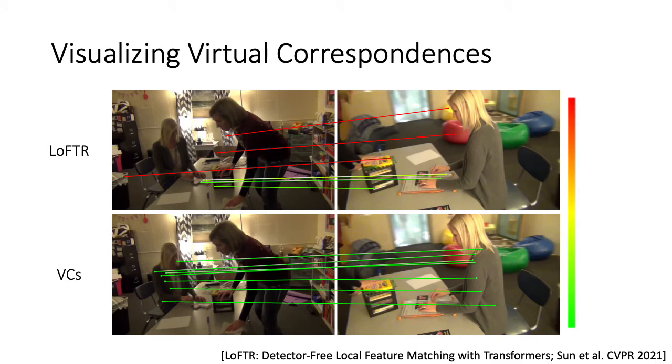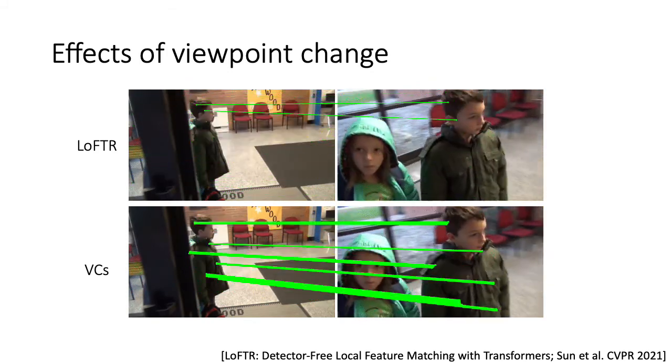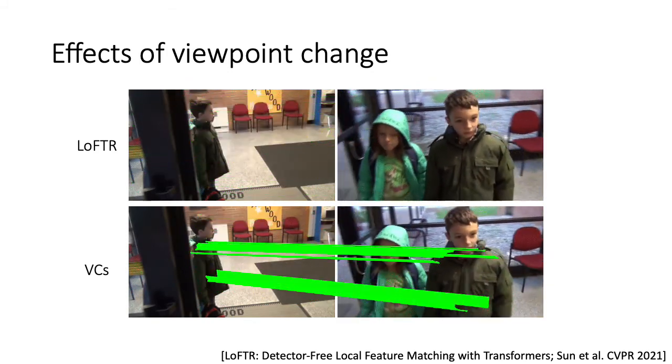Here, we show a few comparisons against classic correspondences. Virtual correspondences can be found despite the scene having little overlap. In contrast, classic correspondences focus on matching pixels based on appearances. As a result, they fail to find correct matches when the viewpoint change increases.